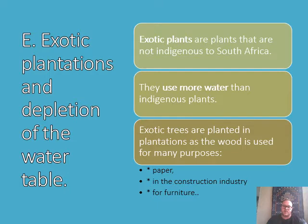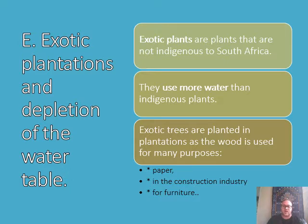Exotic trees are planted in plantations as the wood is used for many purposes. The reason we actively have these in South Africa is because we use them and don't have natural indigenous species that can do the same. Examples include making paper, the construction industry, and furniture - the main one to think of is pine trees, used for paper, construction, and furniture.